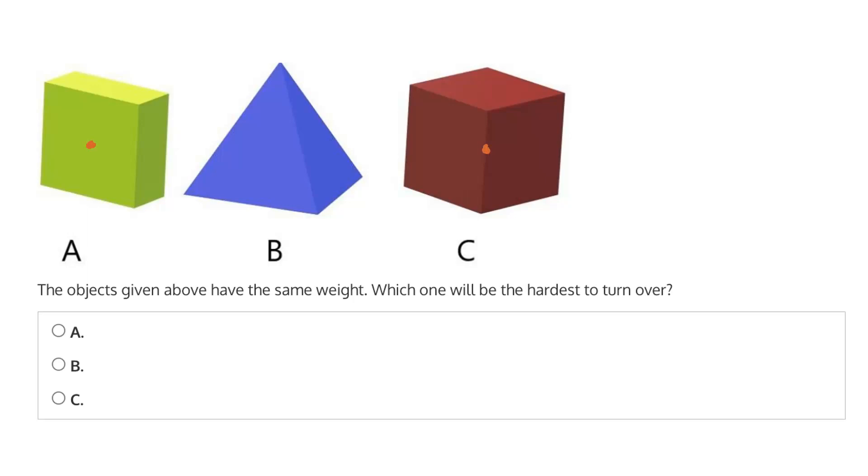Now if we try to do the same thing for the pyramid, we'll see this is not true. Because the center of B, which is to say the center in terms of the volume, so the center of the space taken up by the pyramid, is not the same as the center of mass, as is true for A and C.